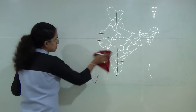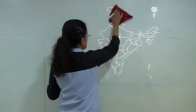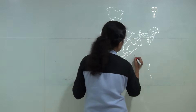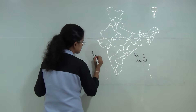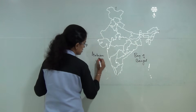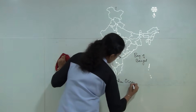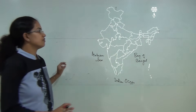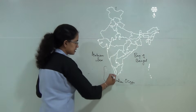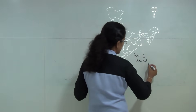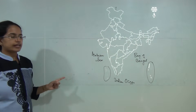India is surrounded by three major water bodies: the Bay of Bengal to the east, the Arabian Sea to the west, and the Indian Ocean to the south. Of all the states and union territories, only two island union territories exist — Lakshadweep, which lies in the Arabian Sea, and the Andaman and Nicobar Islands, which lie in the Bay of Bengal.